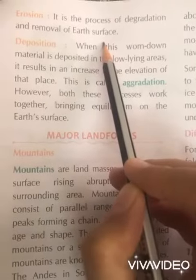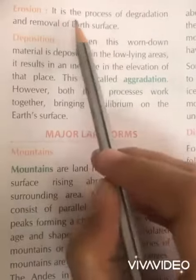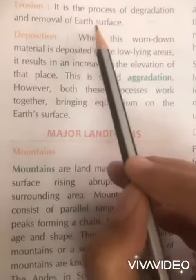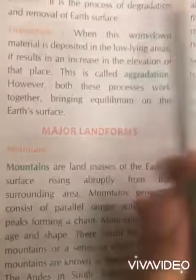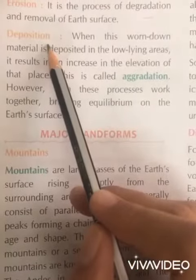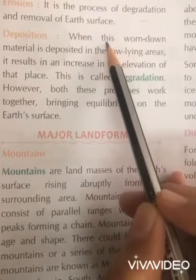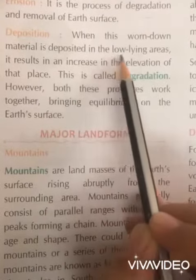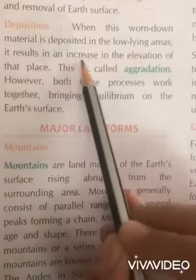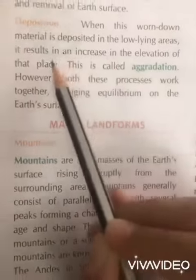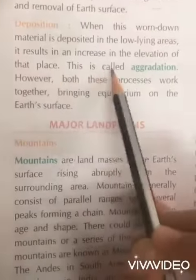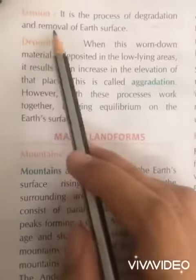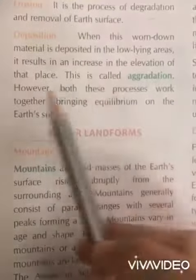Soil erosion is the process of degradation and removal of the earth's surface. Deposition occurs when the worn-down material is deposited in low-lying areas, resulting in an increase in the elevation of that place. This is called aggradation, which is the opposite process of degradation.